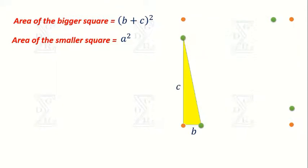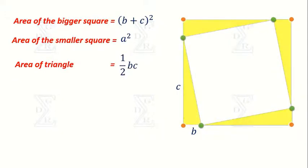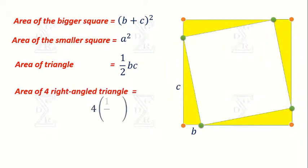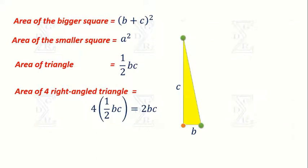So the area of the right-angled triangle is ½bc. As we know the four right-angled triangles are congruent, the total area of the four right-angled triangles is four times ½bc, that is 2bc.